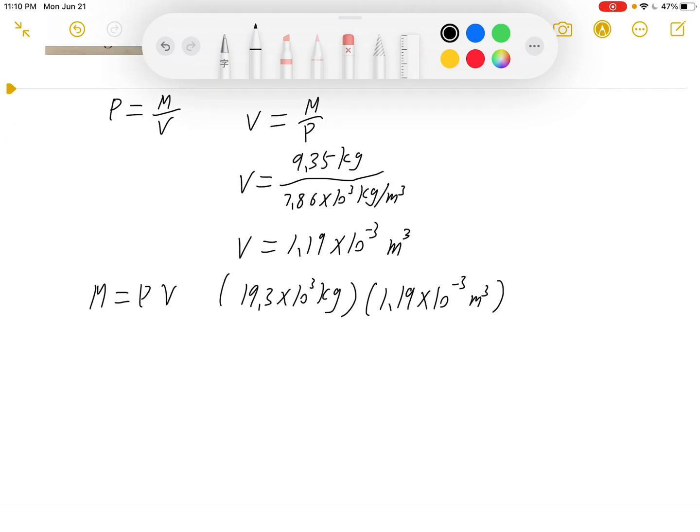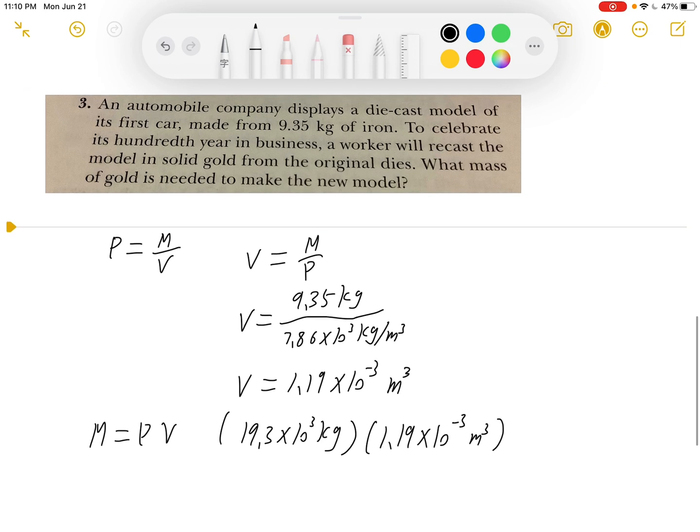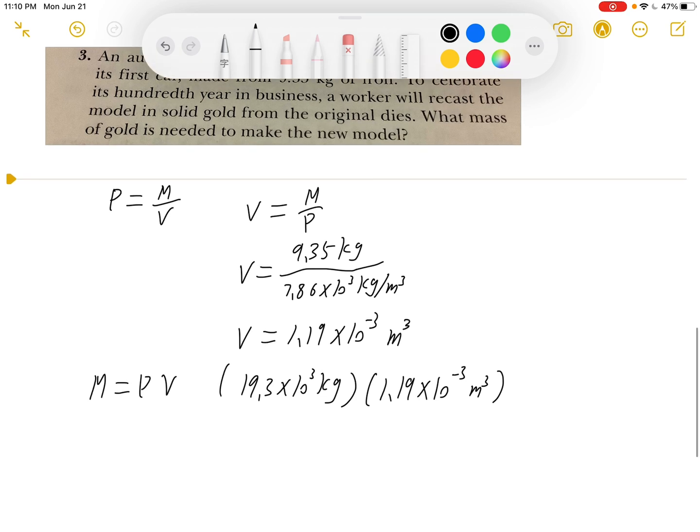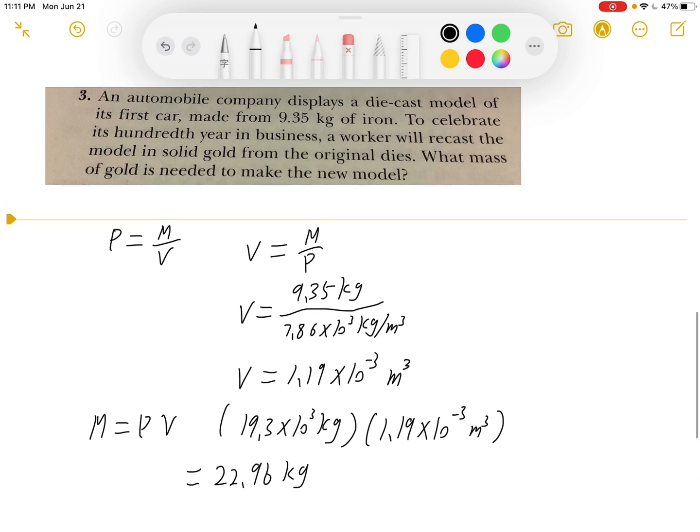So this will give us the mass of the gold to make the new model. After the calculation, we will get 22.96 kg. And this will be the answer for this question.